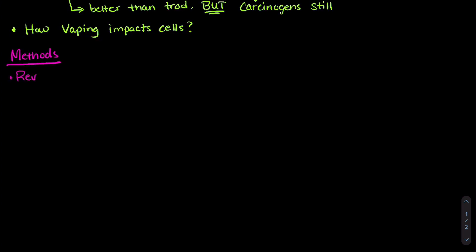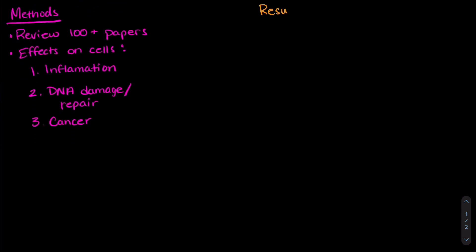This was a study where the researchers reviewed more than 100 papers to look at the effects on cells from e-cigarettes. They divided these effects into three different categories: one is inflammation in the cells, two is DNA damage and repair, and three is cancer. So let's look at what they found and get some results.